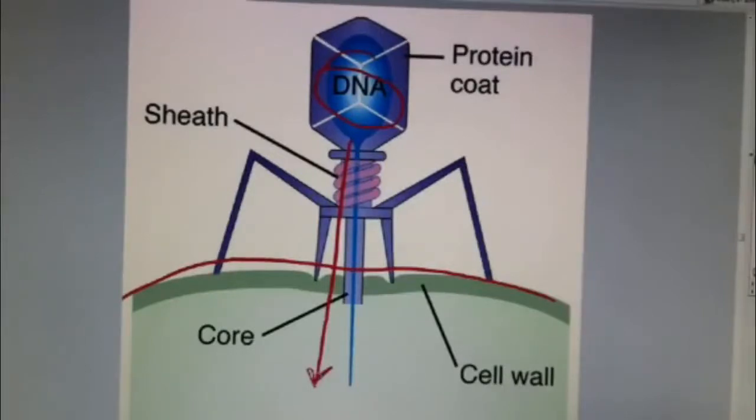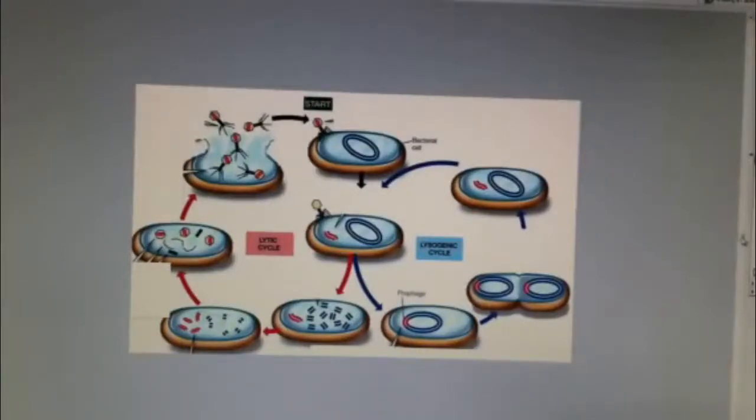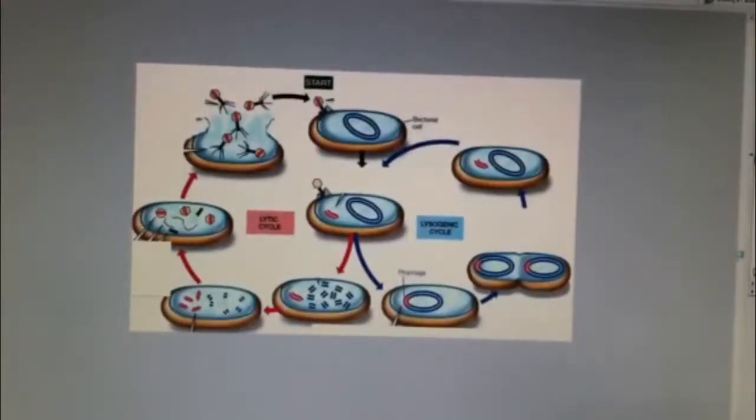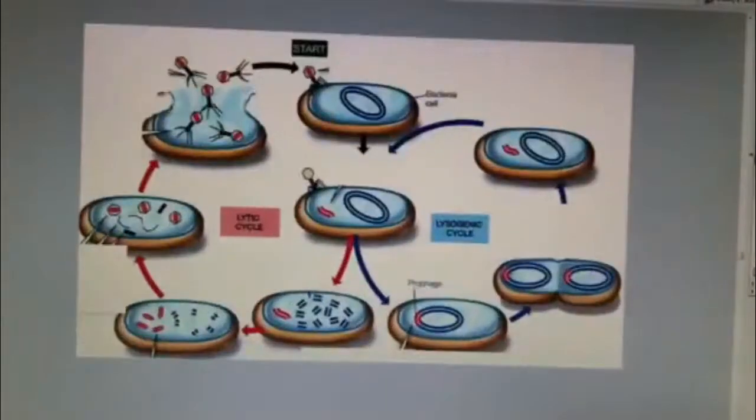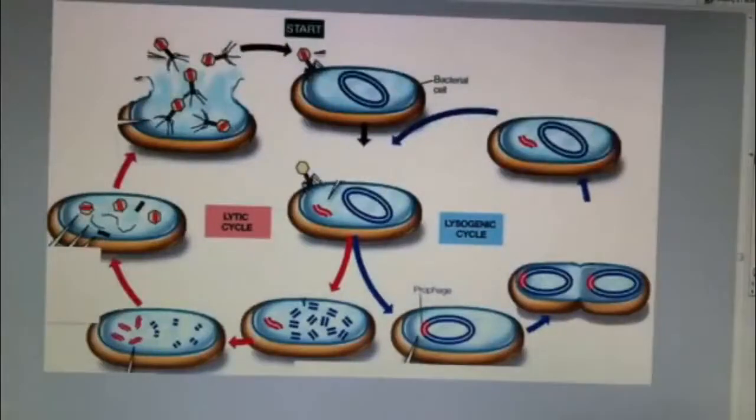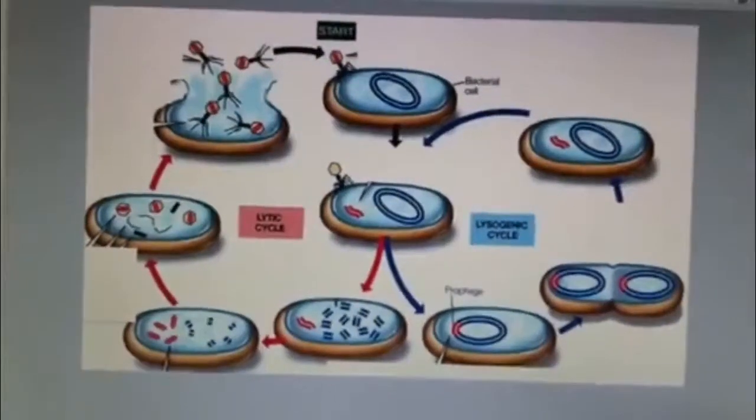And then we'll either enter into the lytic life cycle or the lysogenic life cycle of the bacteria. We have two life cycles that the DNA can take place, the lysogenic or the lytic life cycles. Sometimes certain kinds of phage DNA or virus DNA can exist in the lysogenic life cycle and then enter into the lytic life cycle later on in its life.